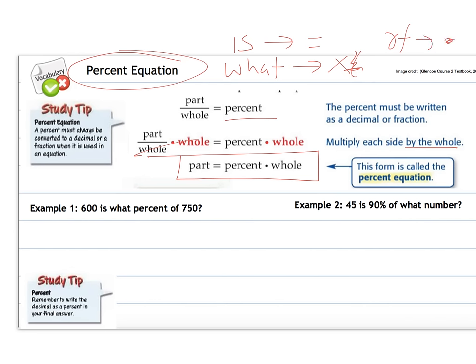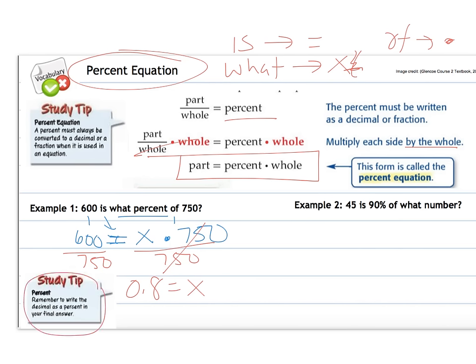So what I do then is I just rewrite things with that language. So I keep 600 'is' means equals. What percent, I need a variable there, of 750. So your goal is to find your variable. So you have a one step equation you're solving for. So I divide by 750. So if I get 600 divided by 750, I get 0.8 equals x. Well, to write a percent, I need to change the decimal to a percent by multiplying by 100, which is really moving the decimal two places to the right. So the answer is 80%. 600 is 80% of 750. Reasonable.